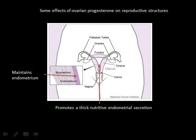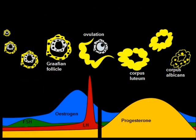If fertilisation does not occur, the corpus luteum dies and progesterone levels fall. Thus, the endometrium is no longer maintained, dies and is shed in the next period.